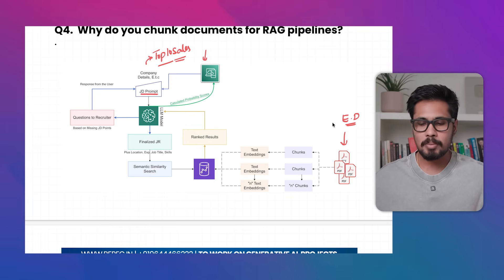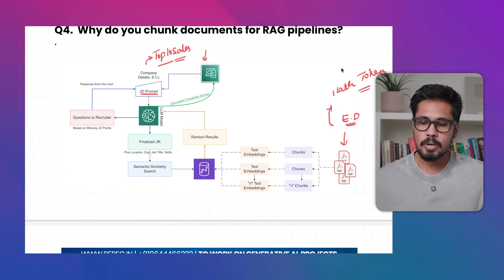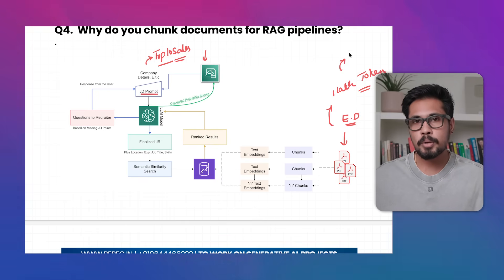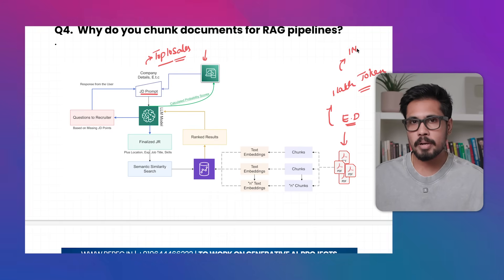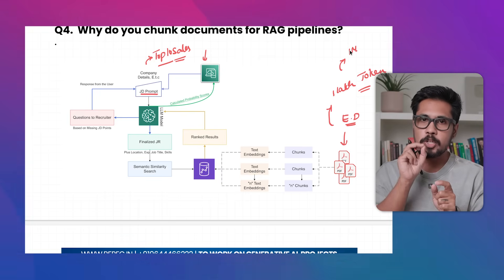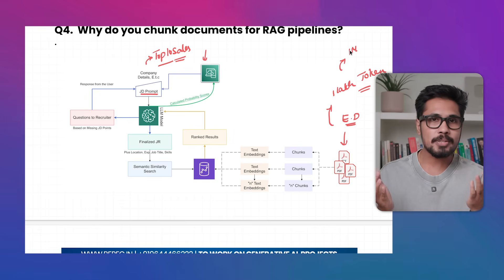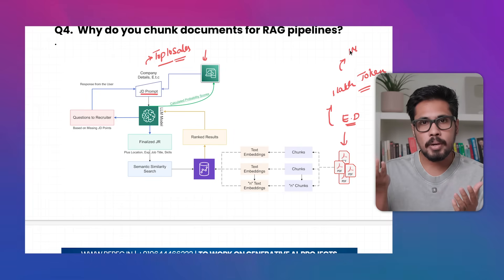Here comes the challenge: if your external document contains 1 lakh tokens, it's a very large document. LLM model providers like OpenAI charge money based on tokens — for example, around $1–$4 per million tokens depending on the model. If for every prompt the LLM searches across 1 lakh tokens, the billing is going to skyrocket.